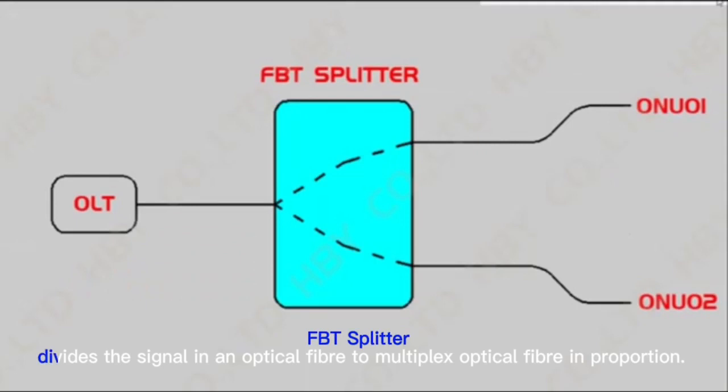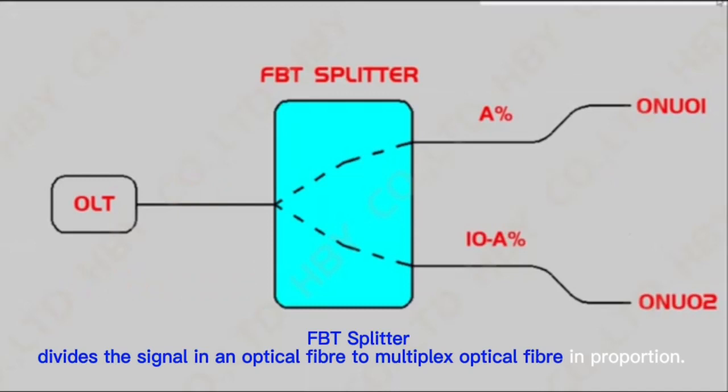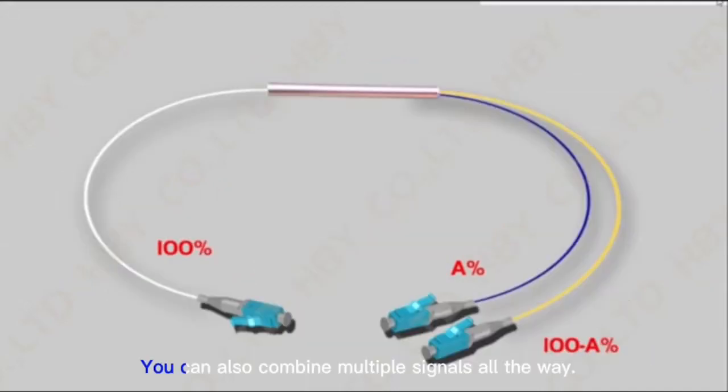An FBT splitter divides the signal in one optical fiber to multiple optical fibers in proportion. You can also combine multiple signals into one.